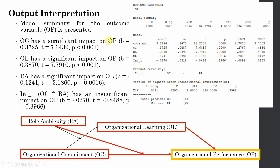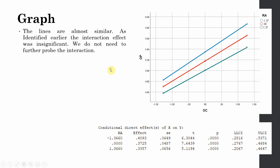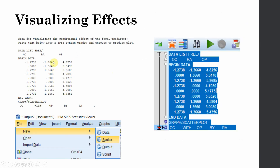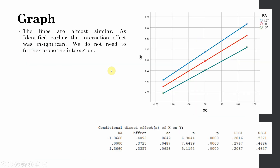OC has a significant impact on OP. OL has a significant impact on OP. RA has a significant impact on organizational performance. However, the interaction is insignificant. We can still visualize the output the same way as before — in this case the outcome is OP.